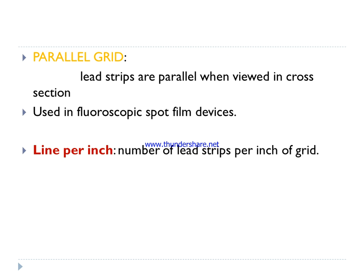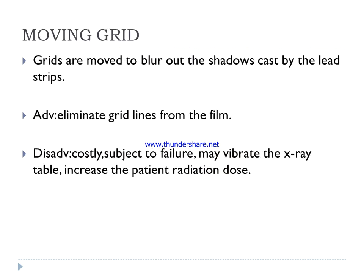In a parallel grid, the lead strips are parallel when viewing the cross section. Parallel grids are used for photoscopic spot film devices. A line pair is equal to the number of lead strips per inch of the grid, called line per inch.